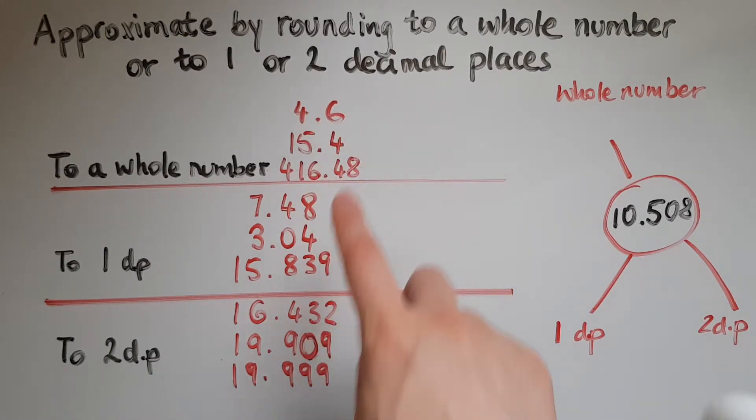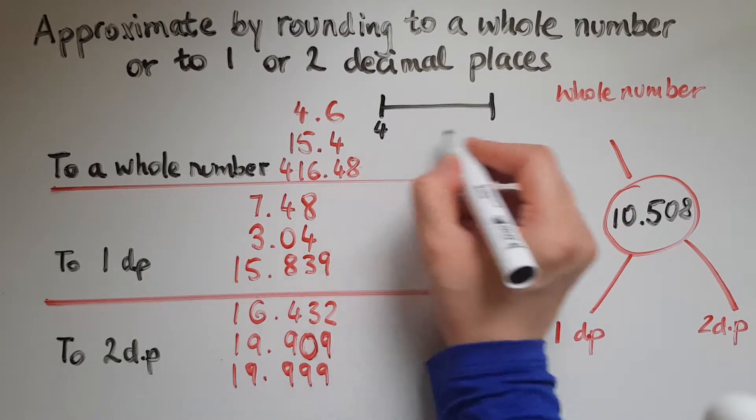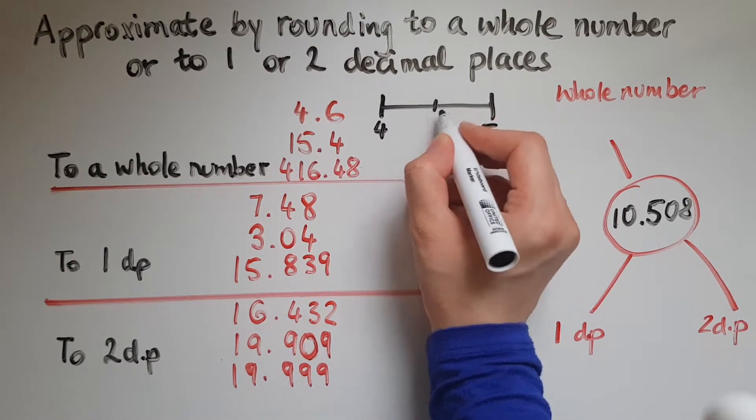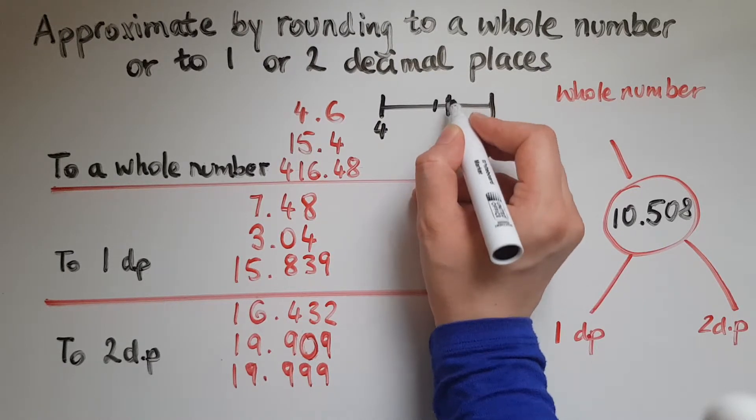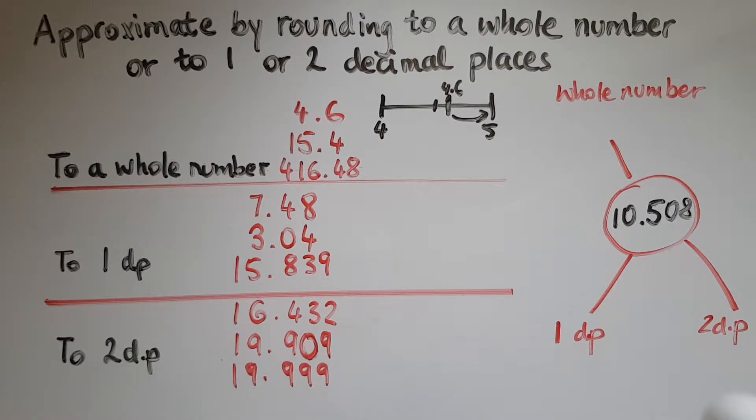So there we have 4.6. That means I just want an answer that is a whole number. So 4.6 is between 4 and 5. Which one is it closer to? 5, and that is actually closer to 5 and I can show that here. So 4 and 5, there is 4.5, 4.6 would be here. So that is closer to 5 and for that reason we'll round it to 5.